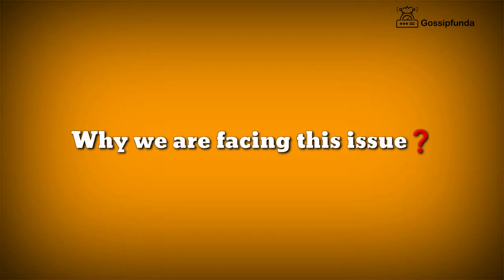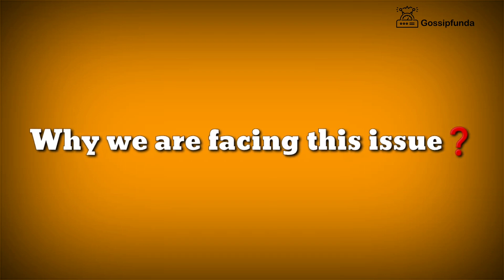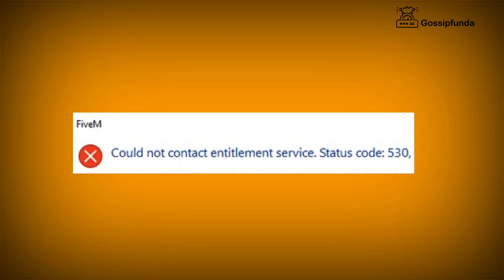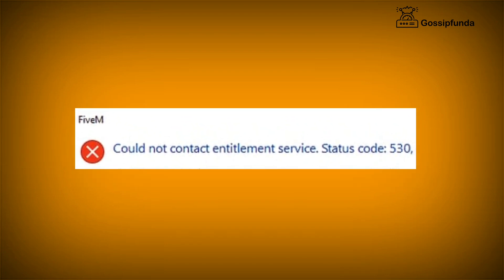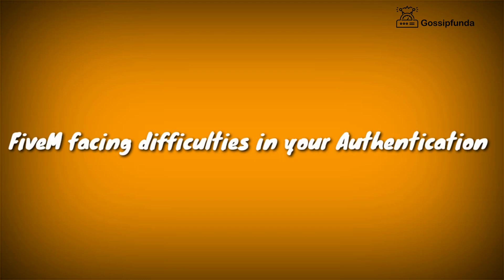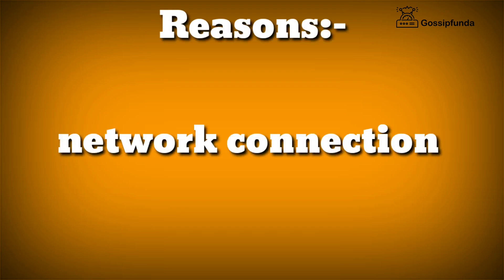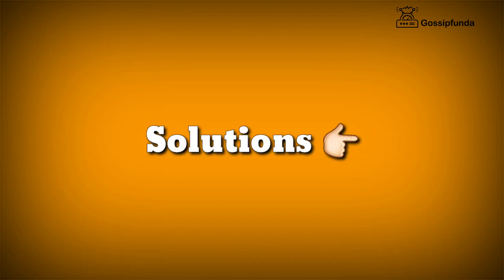Before moving further, let's talk about why we are facing this issue. When you see this error page, it says 'could not contact entitlement service,' which in simple terms means that the 5wams application is having difficulties with your authentication — 5wams is unable to identify you. This might be due to your network or because you are using an unregistered ID. Now let's talk about the solutions we have.